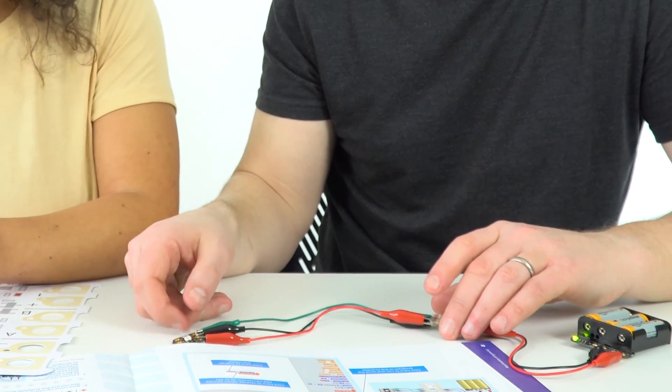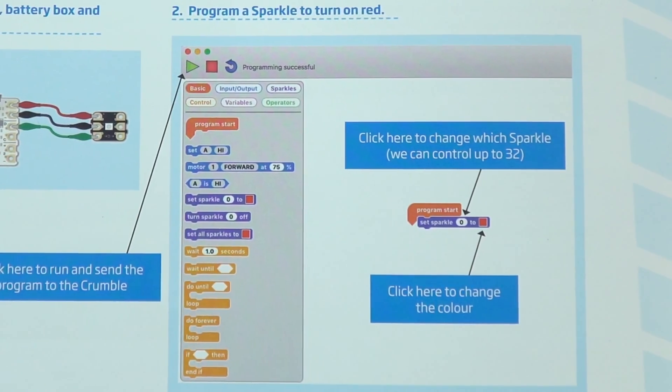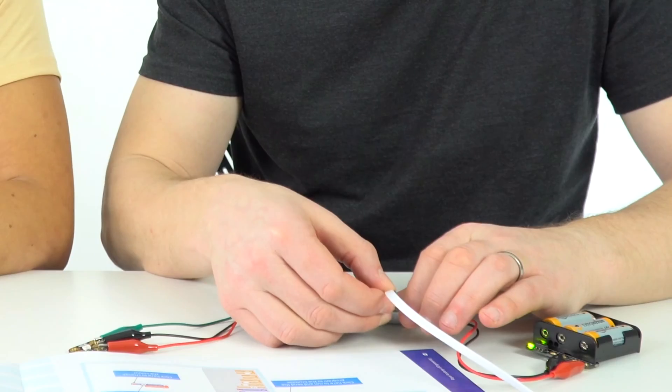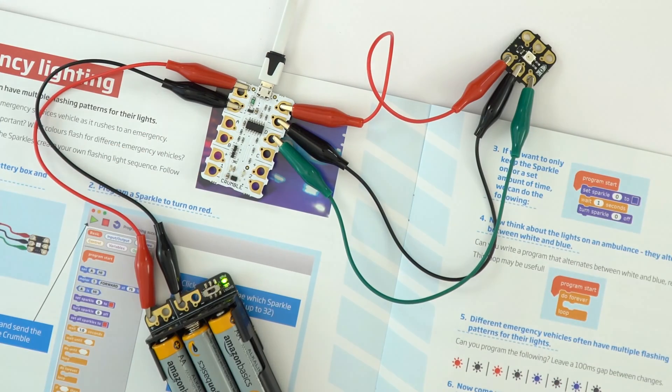The other thing people sometimes forget to do is actually plug in their Crumble to the computer. They might write the code, but they need to make sure they send it to the board, so the USB just plugs in.